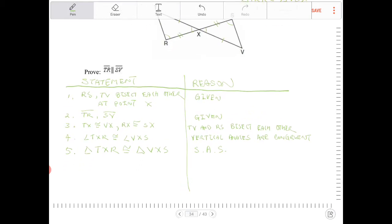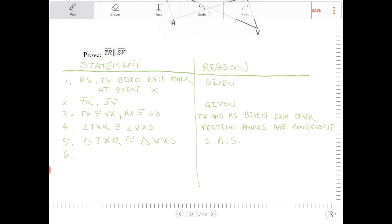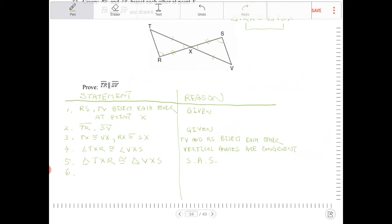So once we have that established, the next thing we can say is that angle R is congruent to angle S. Because of CPCTC. Corresponding parts of congruent triangles are congruent.